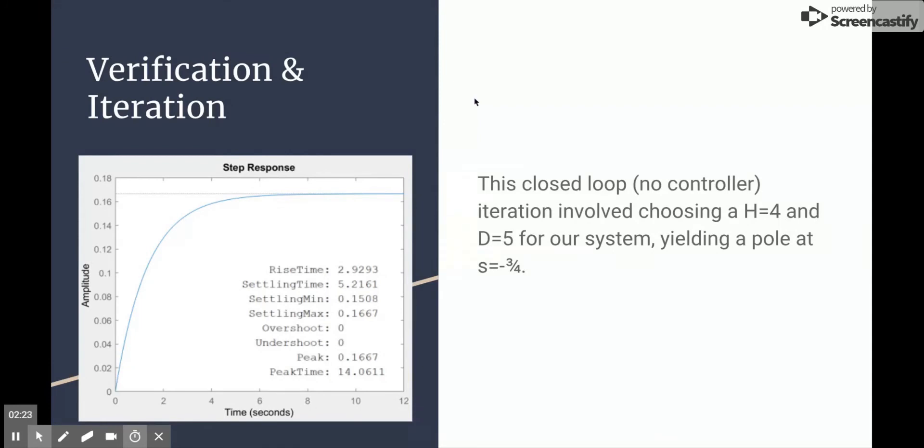Here we changed H to equal 4 and D to equal 5, which gave us one pole at s equals negative 3 fourths. On the right you can see the statistics for rise time, settling time, and overshoot, showing that our closed loop feedback system has a decently fast response and we're ready to move on to the controller.